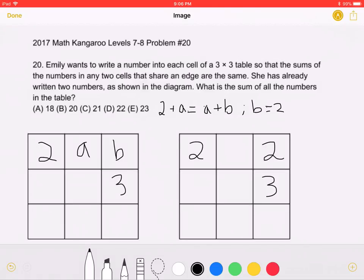We know that 2 plus 3 is equal to 5. Therefore, the sum of the two numbers that share an edge must be equal to 5.